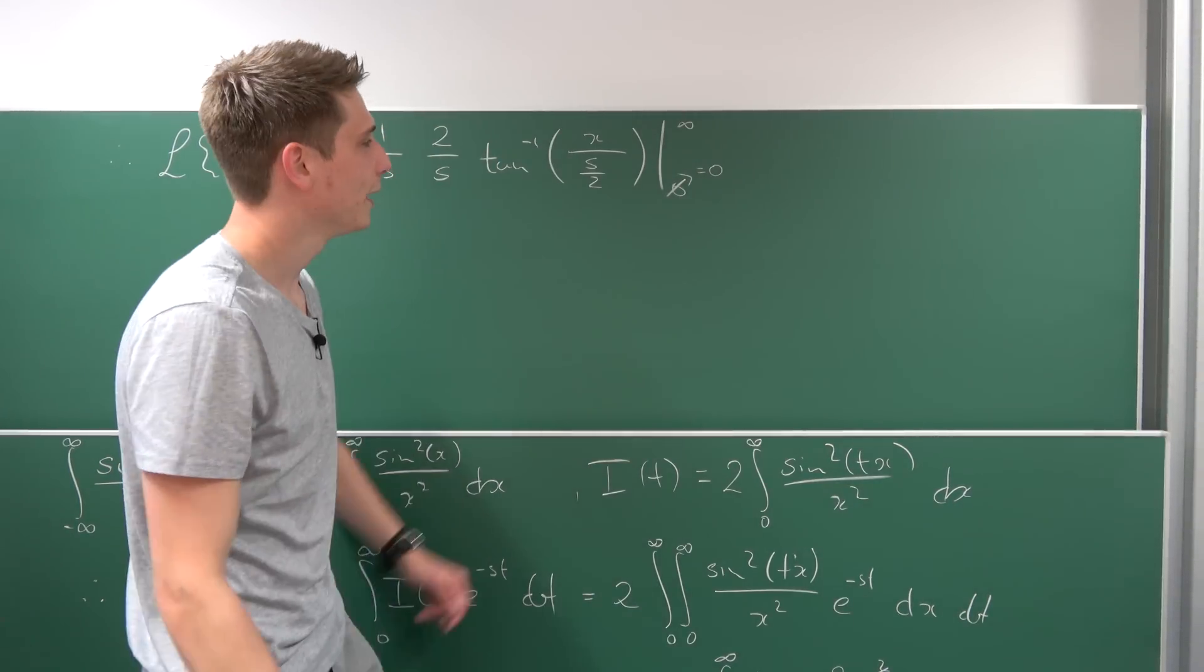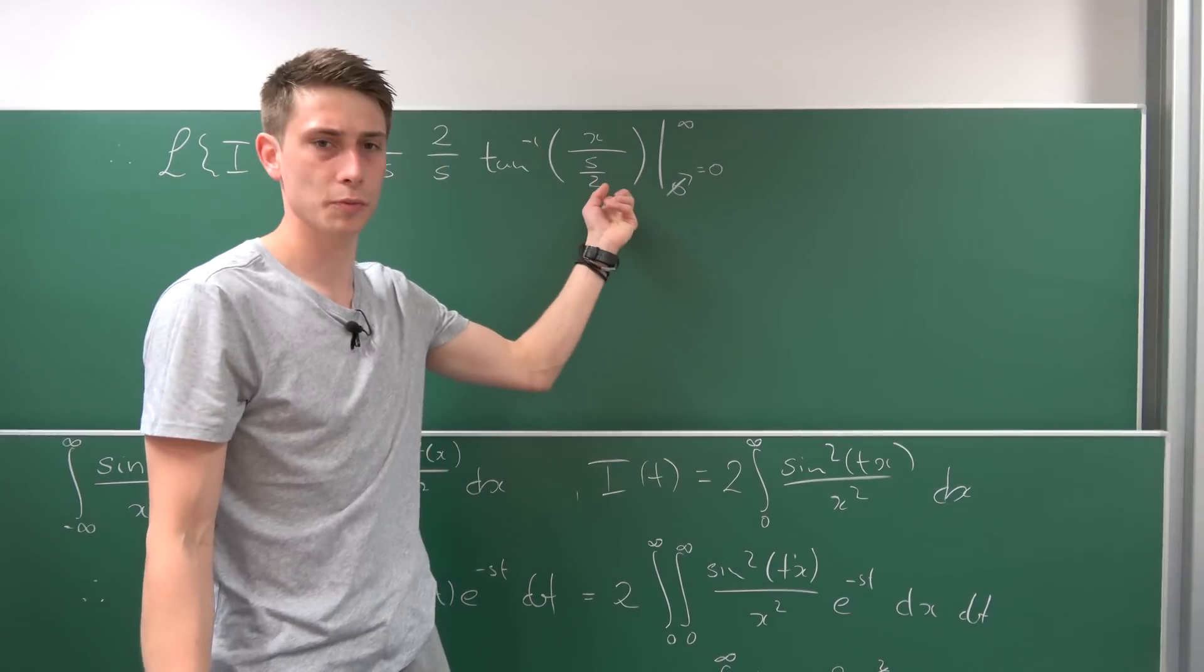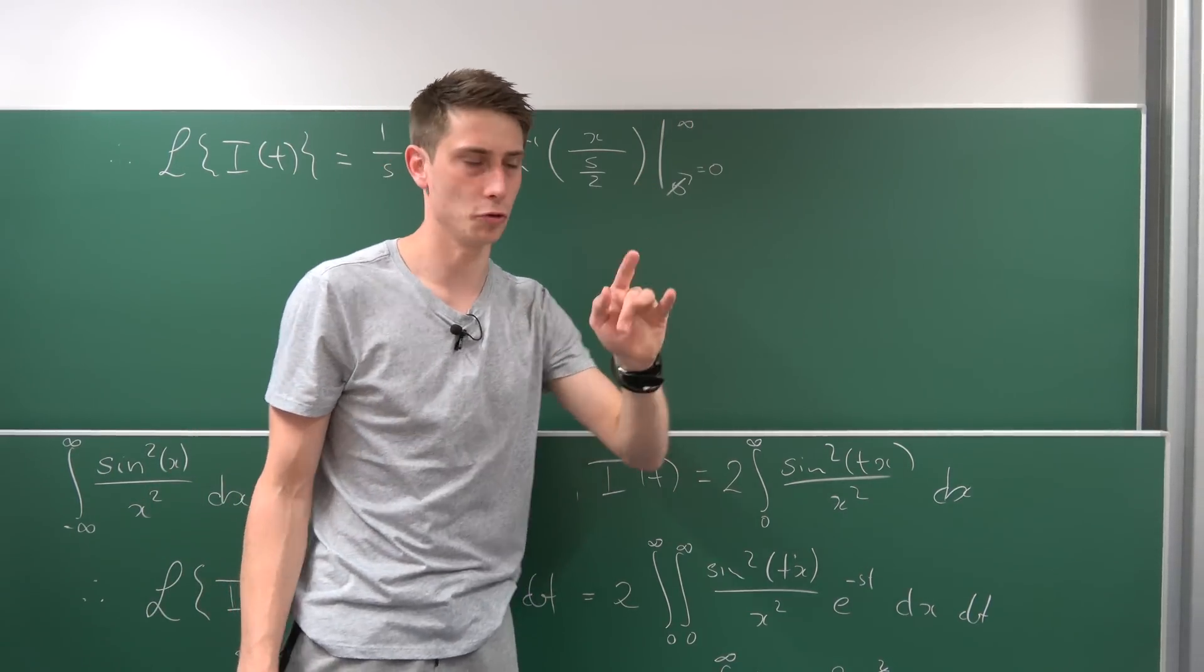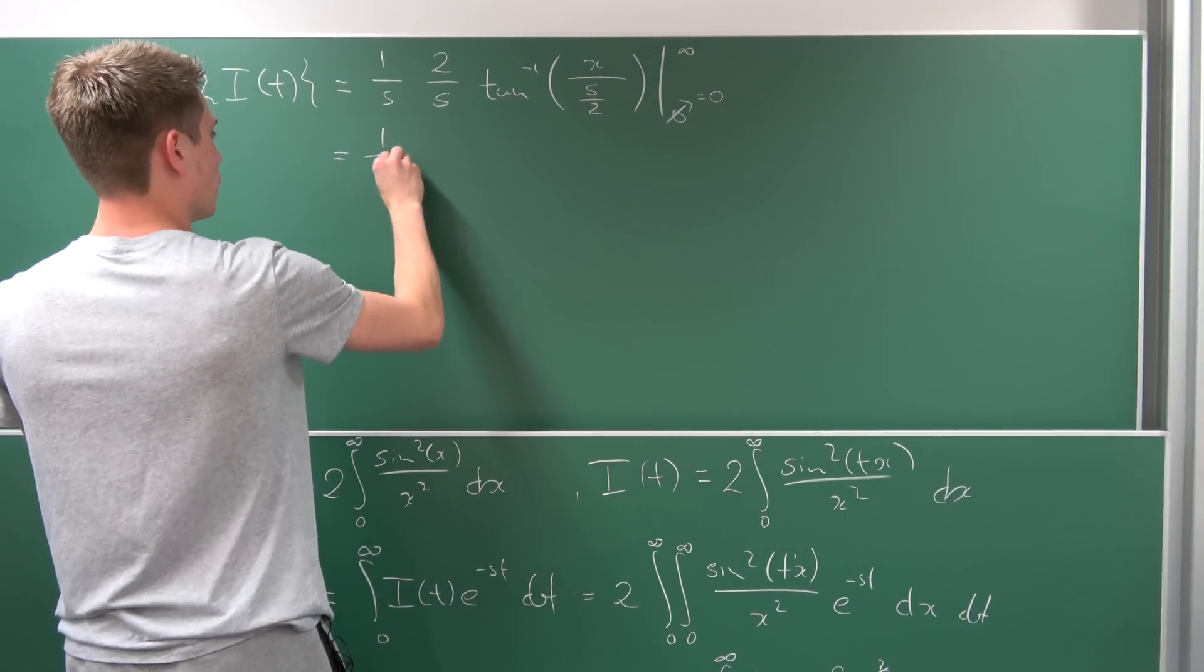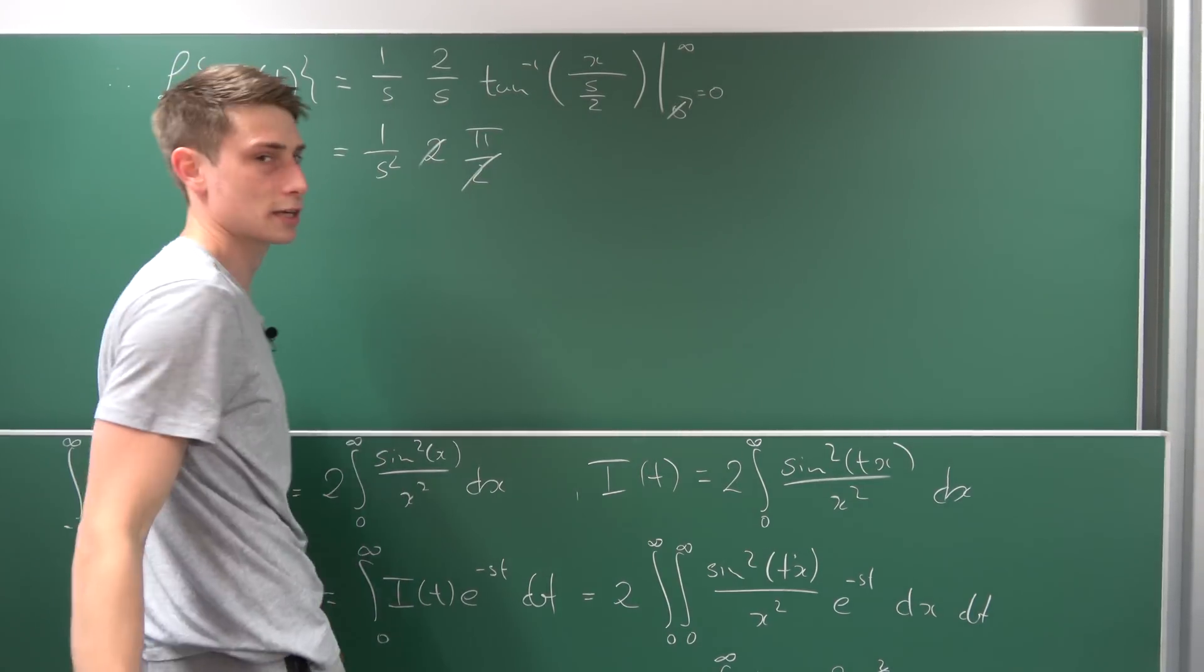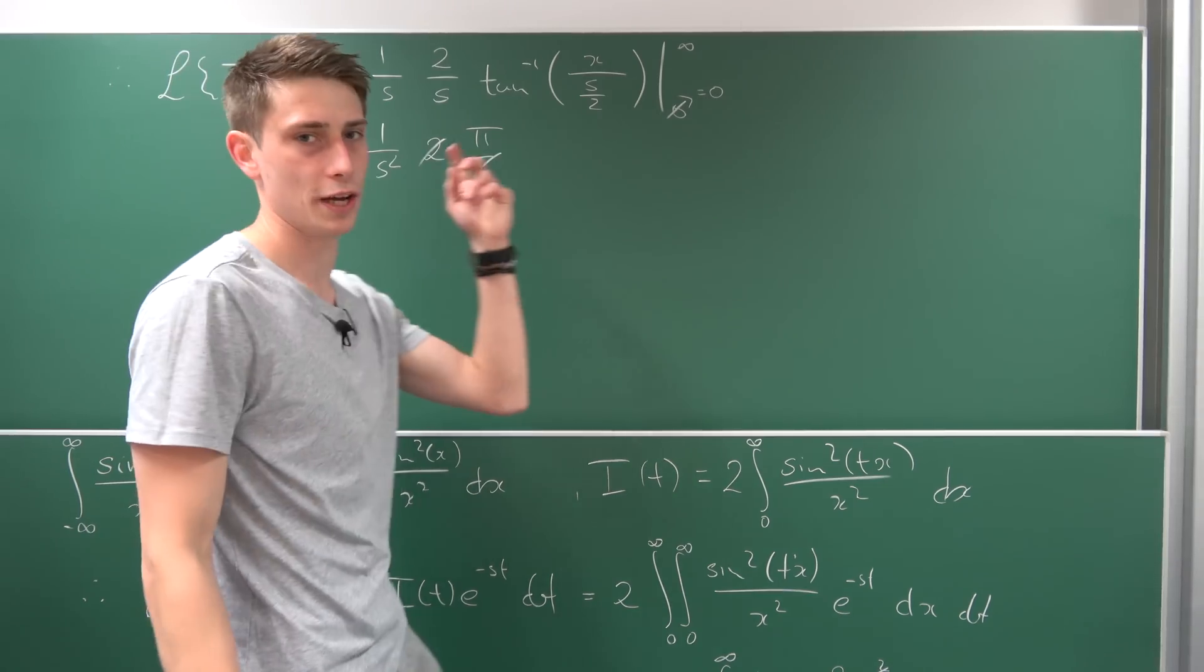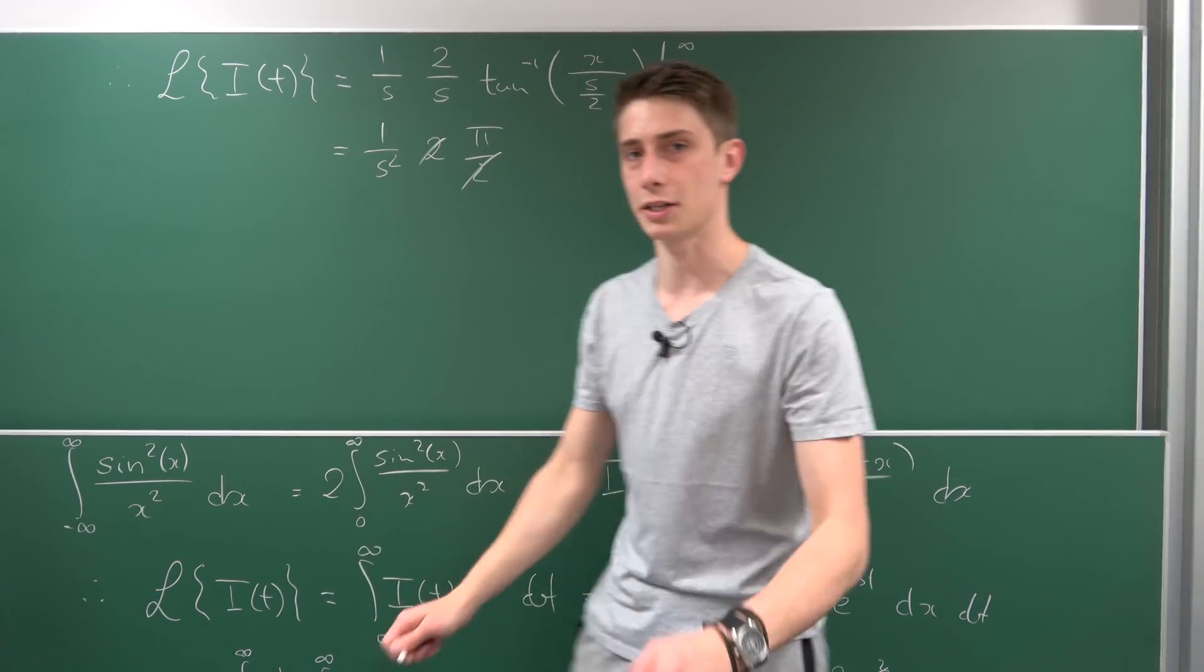If we let the inverse tangent approach infinity in the argument, we get π/2. That's quite nice. Our final answer is 1/s² times 2 times π/2 - these cancel out. So we have π/s². But don't forget we're dealing with the Laplace transform of I(t).